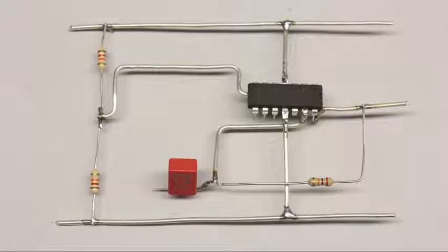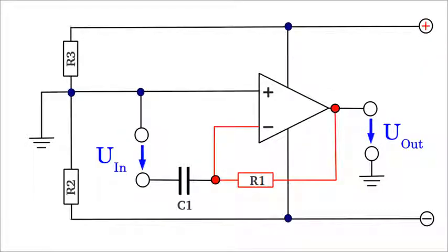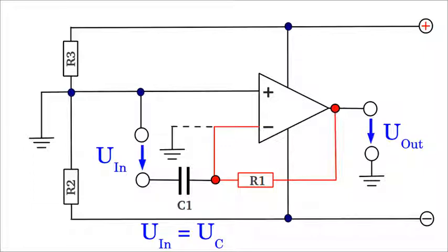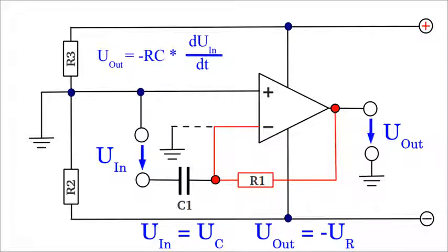When swapping the capacitor and the resistor of the integrator, the resulting circuit is called an active differentiator. The negative feedback loop is now provided by the resistor, while the capacitor is used at the input side. Due to the negative feedback, the potential at the inverting input of the operational amplifier is kept at virtual ground, hence the input voltage equals the voltage across the capacitor, while the voltage across the resistor equals the output voltage. The output voltage is proportional to the time derivative of the input, hence the circuit acts as a differentiator.